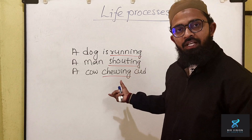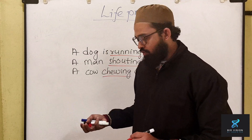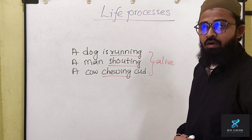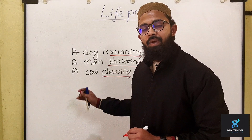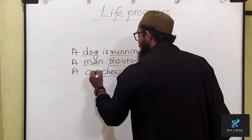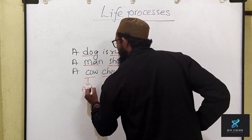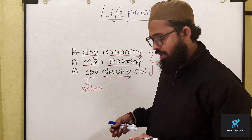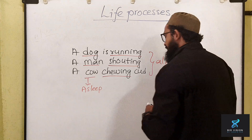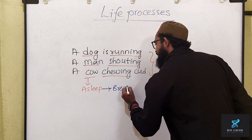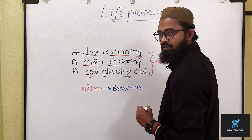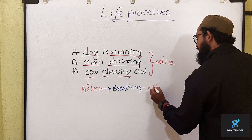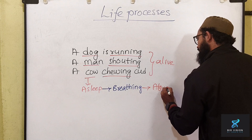Running, shouting, chewing — these are the characters of having life, so by this we can simply say that these organisms are alive. Now what if this dog, cow and man are asleep? When they are asleep, how can you say whether these organisms are alive or not? We can see them breathing. Even though these animals are not doing anything, we can see them breathing. By this we can say they are alive.